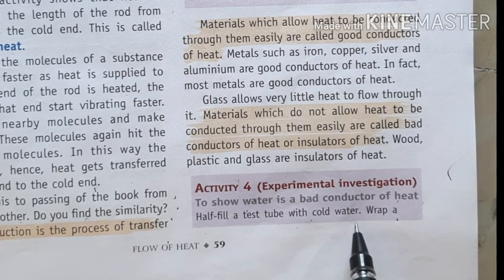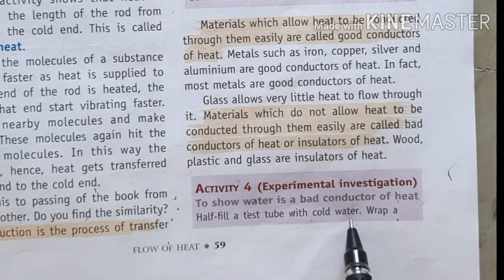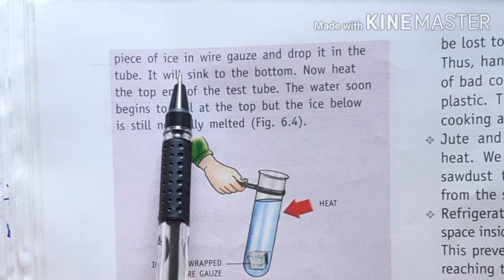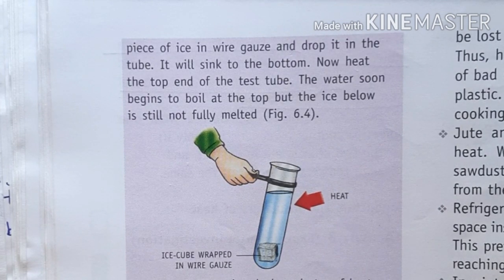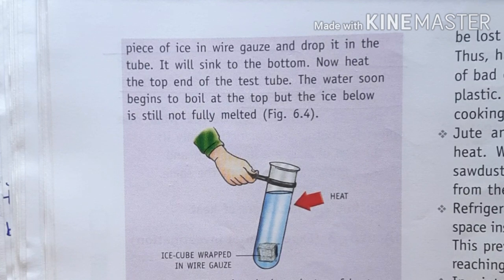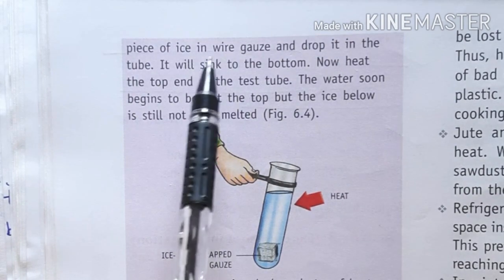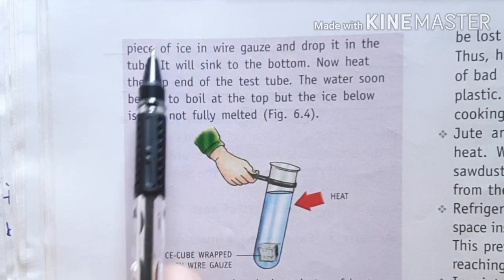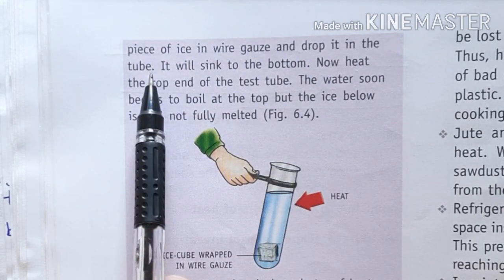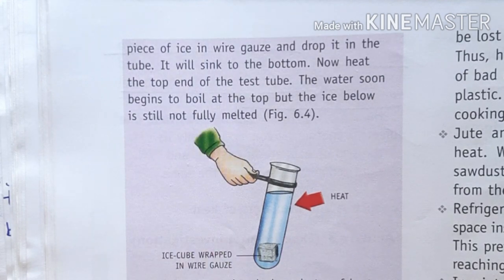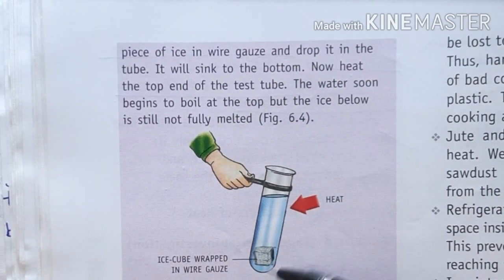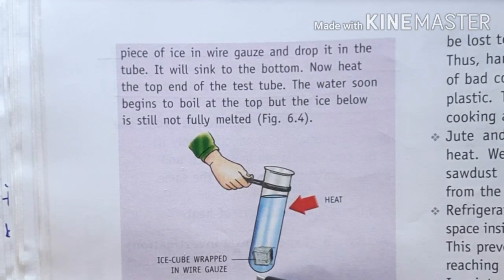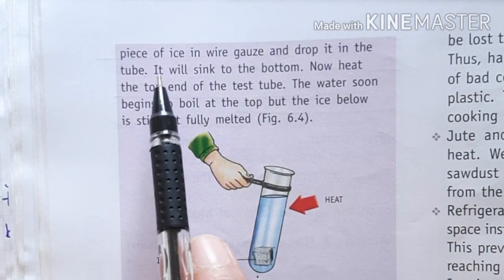Half-fill a test tube with cold water. Wrap a piece of ice in a wire gauze and drop it into the tube. Ice is wrapped in wire gauze because ice would normally float due to its low density; the wire gauze increases its density so it sinks to the bottom of the test tube.